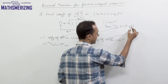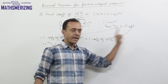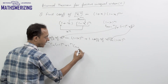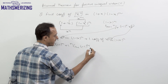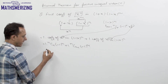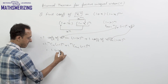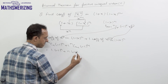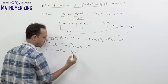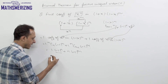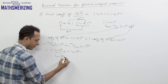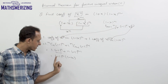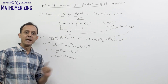For the coefficient of x^(n-1), I put r = n-1, giving nC(n-1) times (-1)^(n-1). Now nCn equals 1, so that term is (-1)^n, and nC(n-1) equals n, so the second term is n times (-1)^(n-1). Taking (-1)^n common, I get (-1)^n times (1 - n). Therefore, the coefficient of x^n in this expansion is (-1)^n times (1 - n).